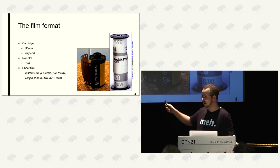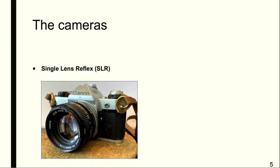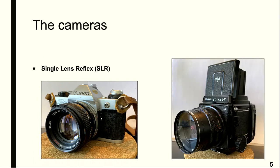So three main formats: most important are 35mm and 120. Now for cameras — there are quite a lot more variations than for digital cameras. You will all have seen the single-lens reflex, or SLR. You have a lens, light goes through it, hits a mirror, goes up into your eye through a viewfinder. You see exactly what you're getting through the lens. Some cameras use a waist-level viewfinder — you hold it at waist level and look down at a ground glass screen to see the image.